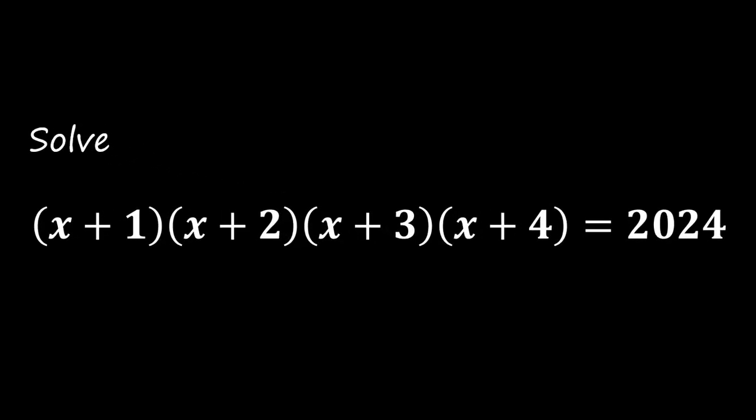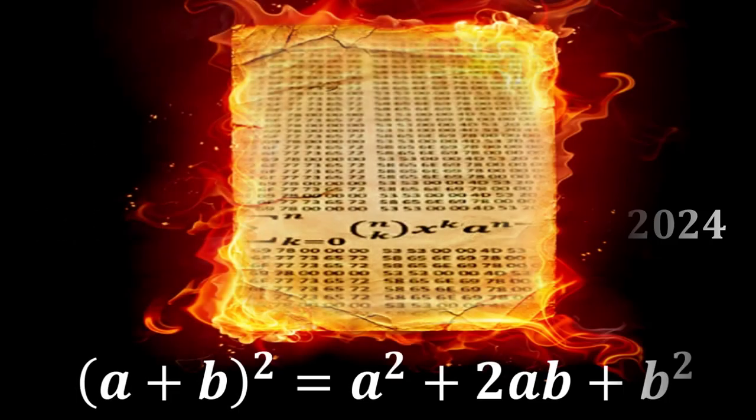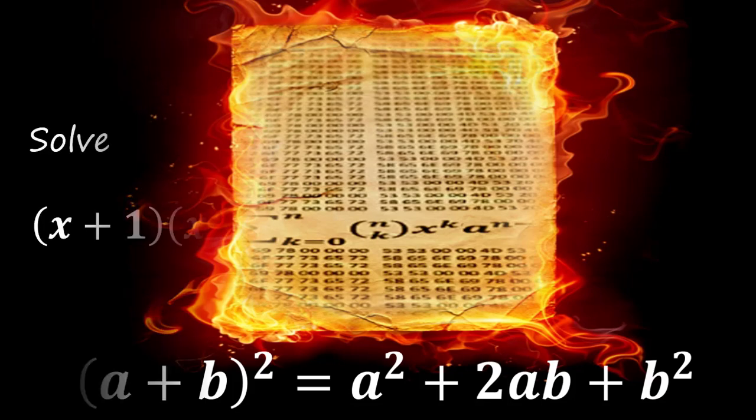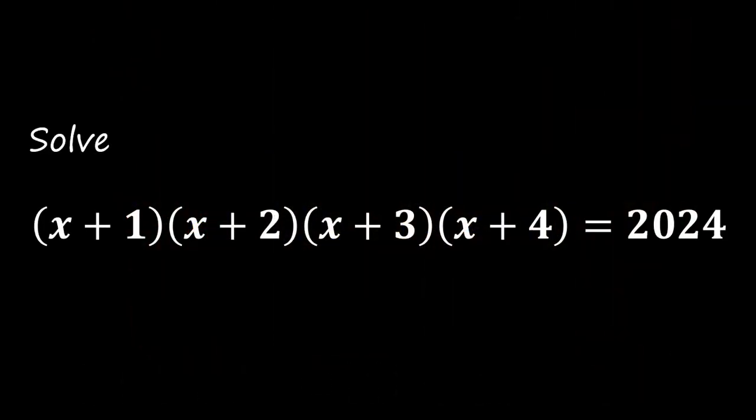Hello everyone, welcome to another exciting math problem involving algebra and quadratic equations suitable for beginners. Here is the problem. Solve the equation (x + 1)(x + 2)(x + 3)(x + 4) = 2024.